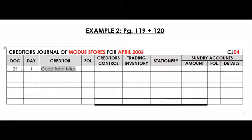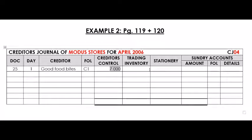The creditor's name is Good Food Bites. The creditor's number was given as creditor number 1, and this folio column will be used for the creditor's number. Every value in the CJ must go to the Creditors Control column and to somewhere else — very similar to the CPJ. Because we purchased frozen veggies and we've got a food store, it must also go to trading inventory.